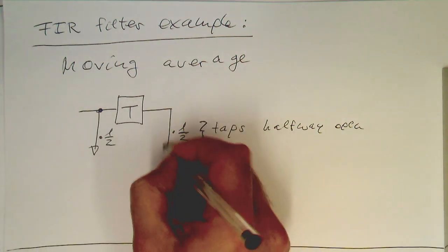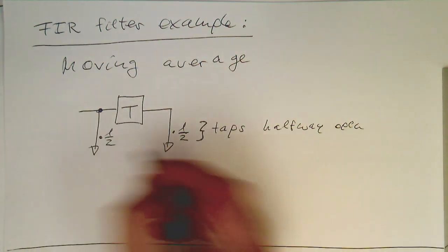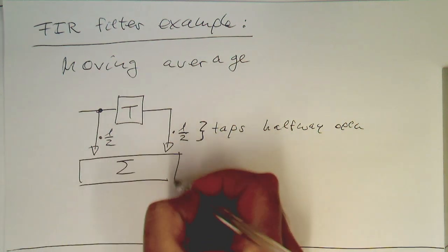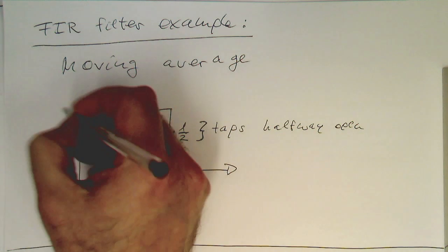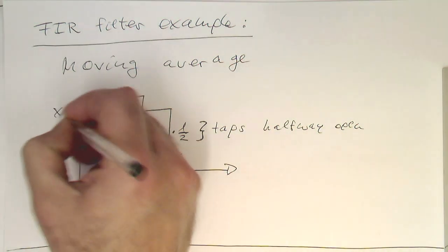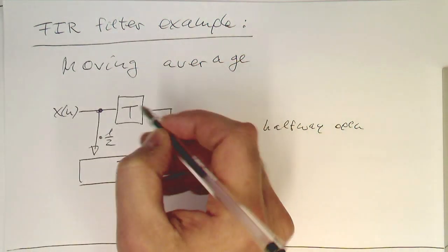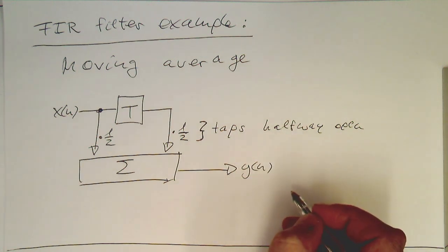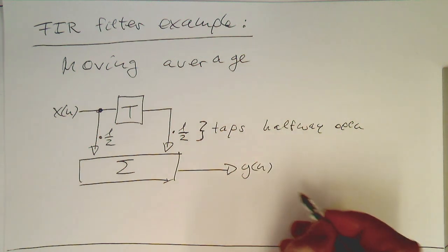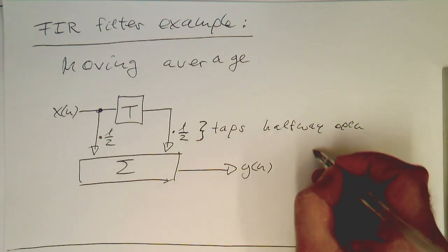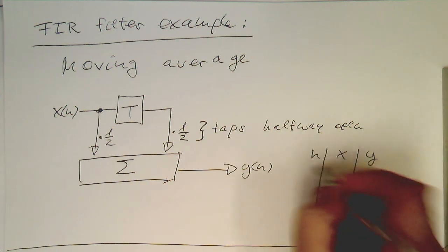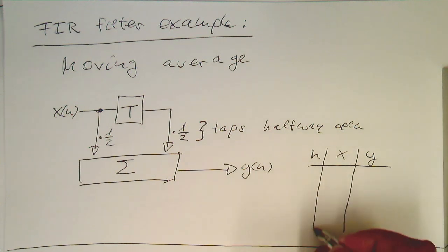After we've multiplied by the factor half, we just add this up and send it out. So that's our input signal x of n, and that's our output signal y of n. We can make a simple table with the time steps, the input, and the output.